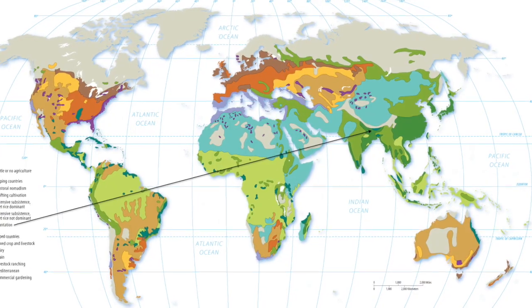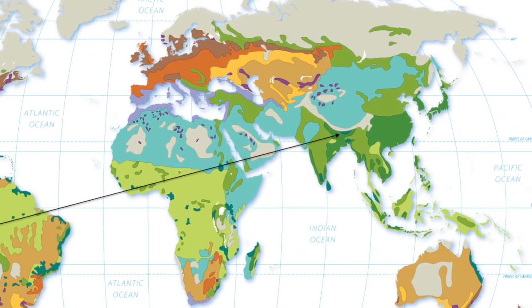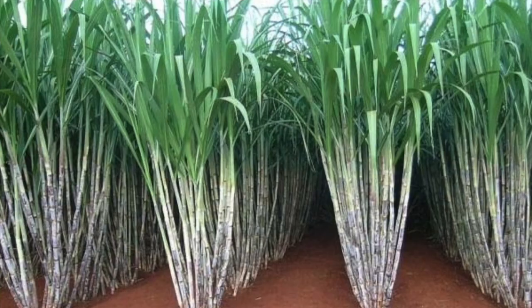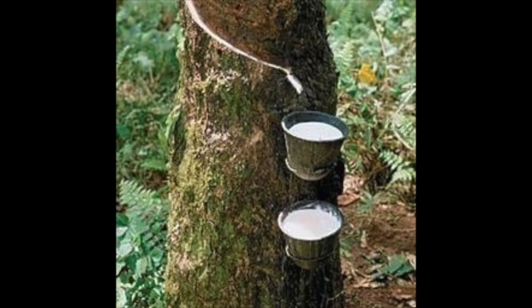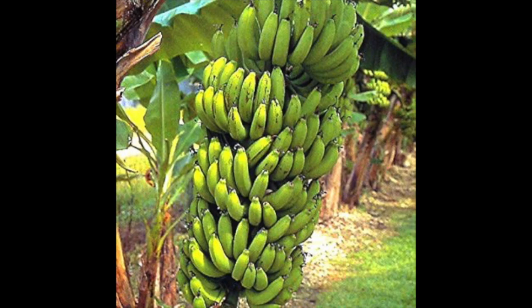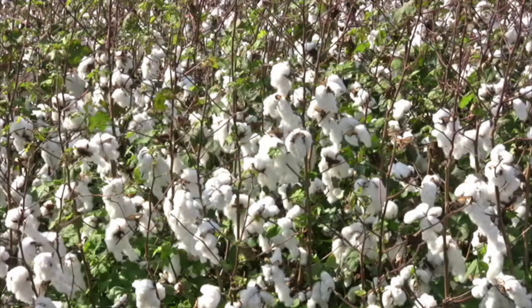A second agricultural region we're going to take a look at is plantation. Plantations are large farms that specialize in one crop. They're usually located in hot, humid areas where they have cheap labor. Typical plantation crops include coffee, tea, sugar, rubber, bananas, tobacco, and cotton.